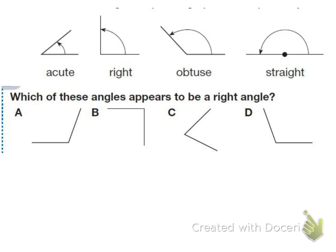This angle here is an acute angle. An acute angle is a small angle that is less than a right angle. Our right angles form a square corner. Acute angles are smaller than a right angle, and we can remember that by saying they're "aww, they're so cute" because they're small.